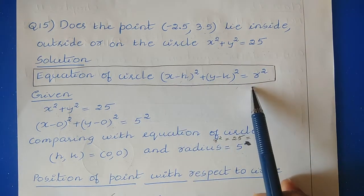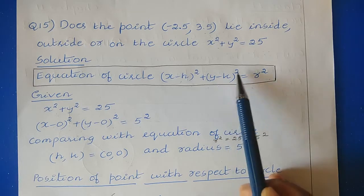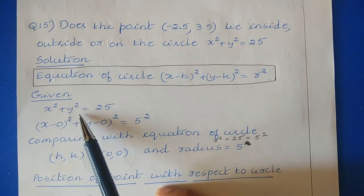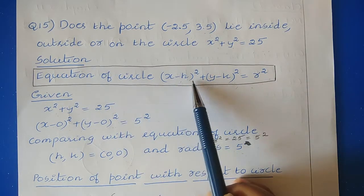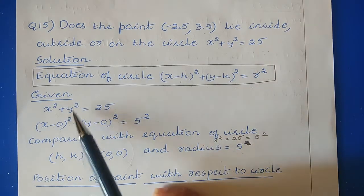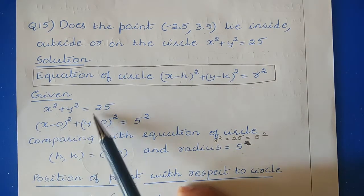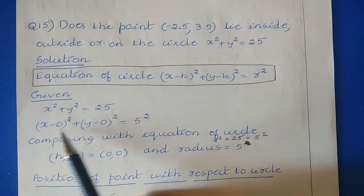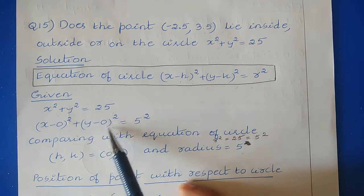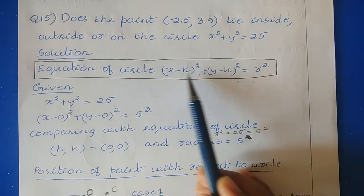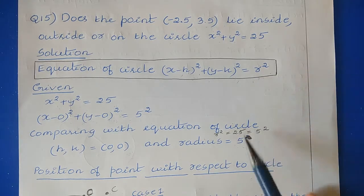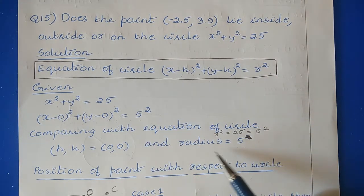The general equation of the circle is (x − h)² + (y − k)² = r². The given equation is x² + y² = 25, which can be written as (x − 0)² + (y − 0)² = 5². Comparing, the center is (0, 0) and the radius r = 5.